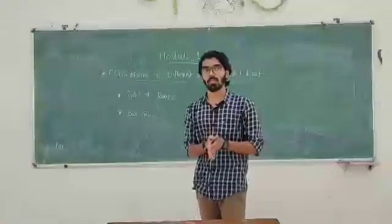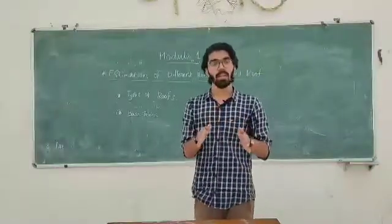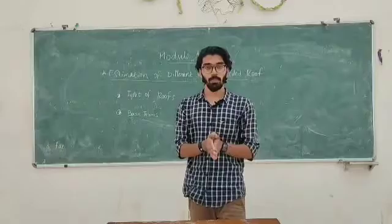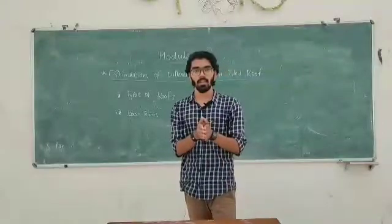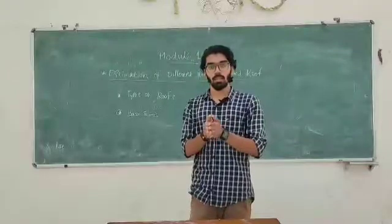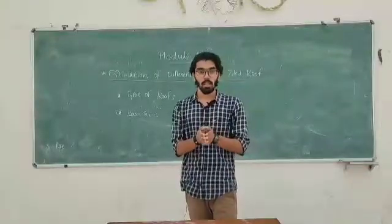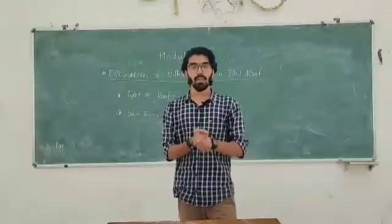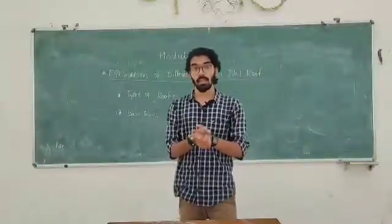What is the gable roof? It is a roof that slopes on two sides. We can see the ridge on the two sides. We use roofing materials like tiles, aluminum, and asbestos sheets, with different components to support the roofing materials. We are going to study the quantity of this topic.